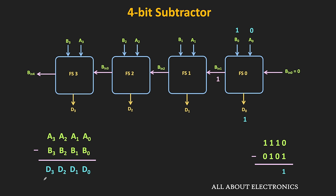In the next column, A1 is equal to 1, B1 is equal to 0, and the incoming borrow is also equal to 1. So 1 minus 0 equals 1, and 1 minus 1 equals 0. That means the difference is equal to 0, while the borrow is also equal to 0. In the next block, both A2 and B2 are 1. That means 1 minus 1 equals 0, and since the incoming borrow is equal to 0, the result is also 0. Both difference and borrow outputs are 0.